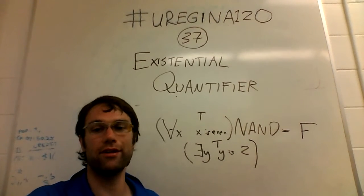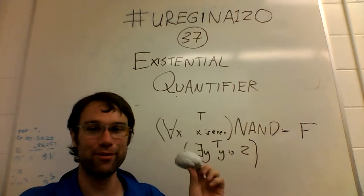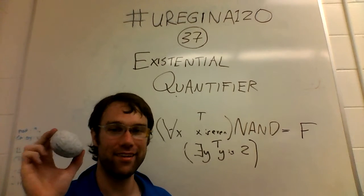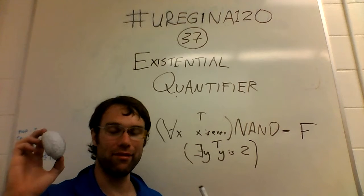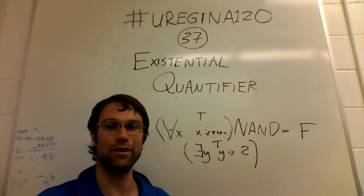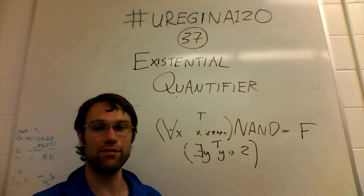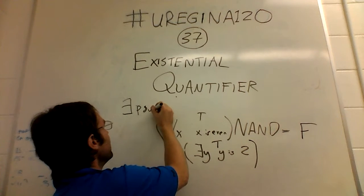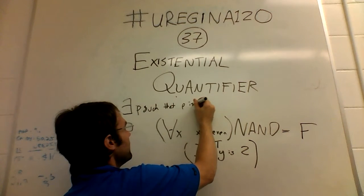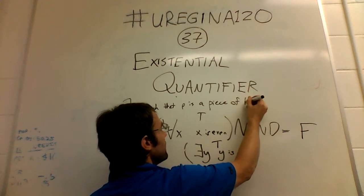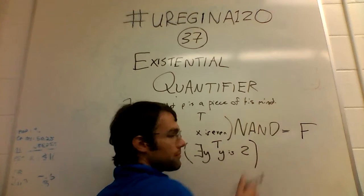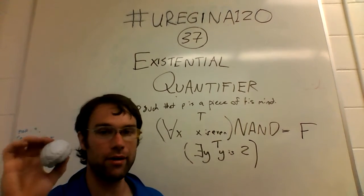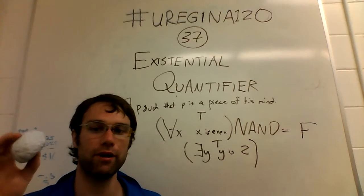Just as a last cute example, this little brain was thrown at me today by Chris across the room, saying that he was going to throw me a piece of his mind. This is, of course, an example of the kind of sense in which we're talking about things that exist. So there exists a piece of his mind.